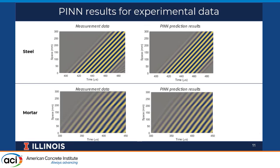The left figures show measurement data from the experimental samples — mortar and steel — and the right figures show wave field data predicted by the PINN model. They look very similar, which is expected since 80% of the measurement data was used to train the PINN model. However, we are not really interested in the wave field data; we are interested in the wave velocity, which was not provided to the PINN model.